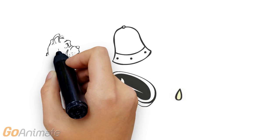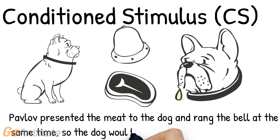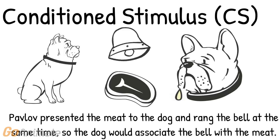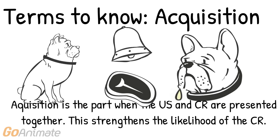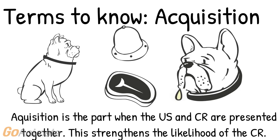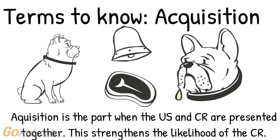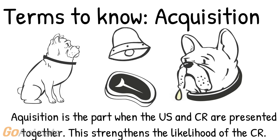Pavlov presented the meat to the dog and rang the bell at the same time, so the dog would associate the sound of the bell with the meat and eventually salivate to the sound of the bell. Acquisition is the part when the unconditioned stimulus and the conditioned stimulus are presented together to produce the conditioned response — basically when the conditioned response is learned.